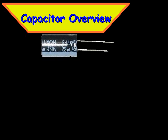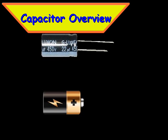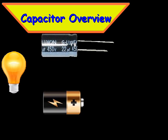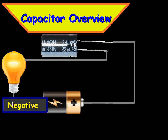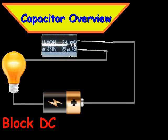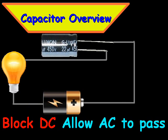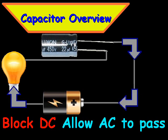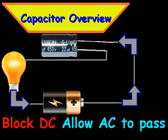In this example in front of us we have a battery, a light bulb, and a capacitor. What that capacitor does is it blocks direct current and allows alternating current to pass through.